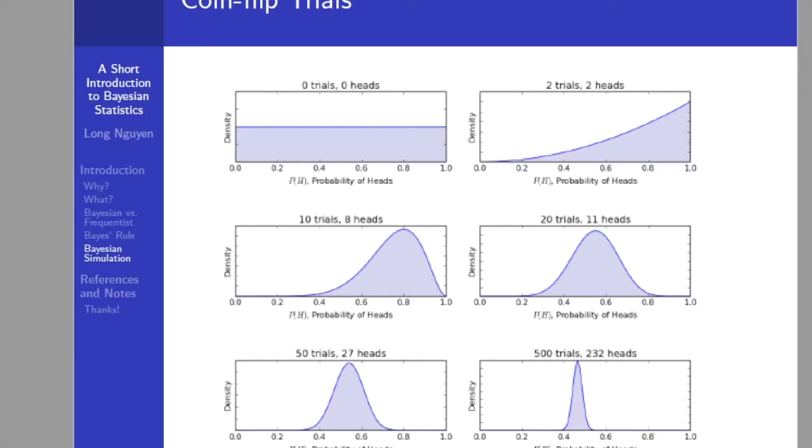We are going to use a uniform distribution as a means of characterizing our prior belief that we are unsure about the fairness. This states that we consider each level of fairness or each value of Theta to be equally likely. In the following figure, we can see six particular points at which we have carried out a number of Bernoulli trials or coin flips. In the first graph, we have had no trials and hence our probability density function, or prior density in this case, is a uniform distribution. It states that we have equal beliefs in our values of Theta representing the fairness of the coin.